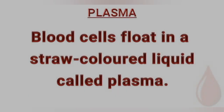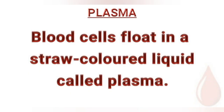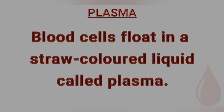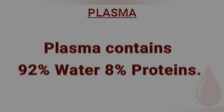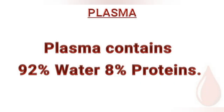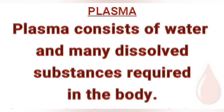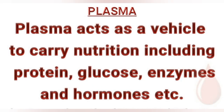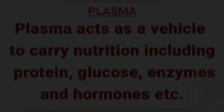Blood cells float in a straw-colored liquid called plasma. Plasma contains 92% water and 8% proteins. Plasma consists of water and many dissolved substances required in the body. Plasma acts as a vehicle to carry nutrients including proteins, glucose, enzymes, and hormones.